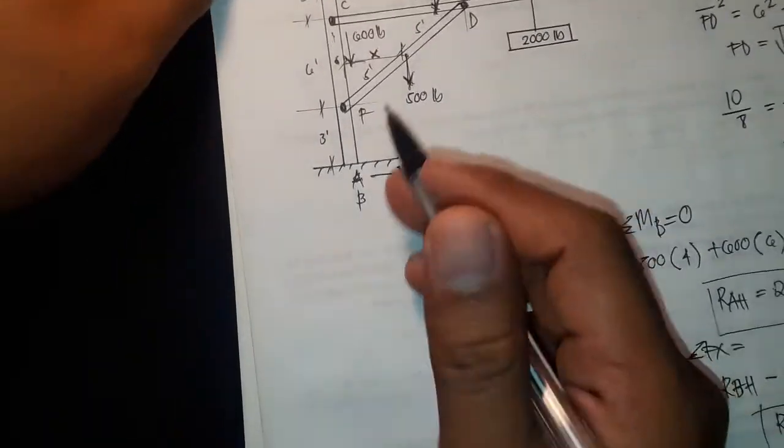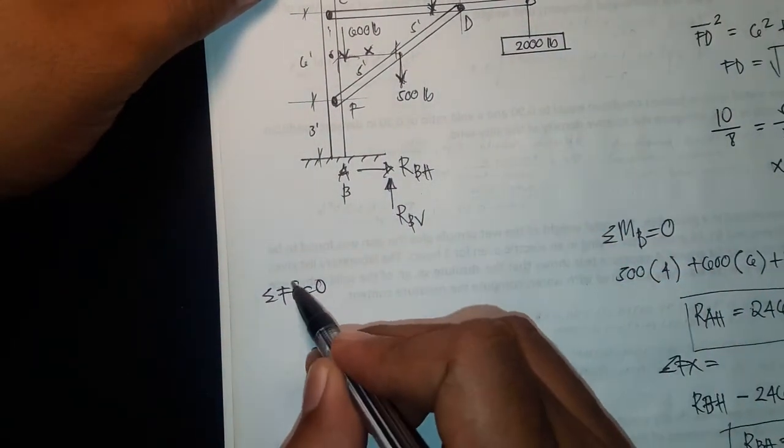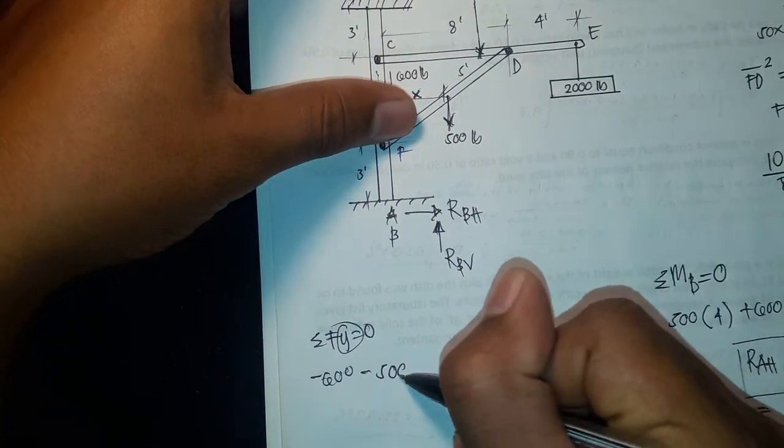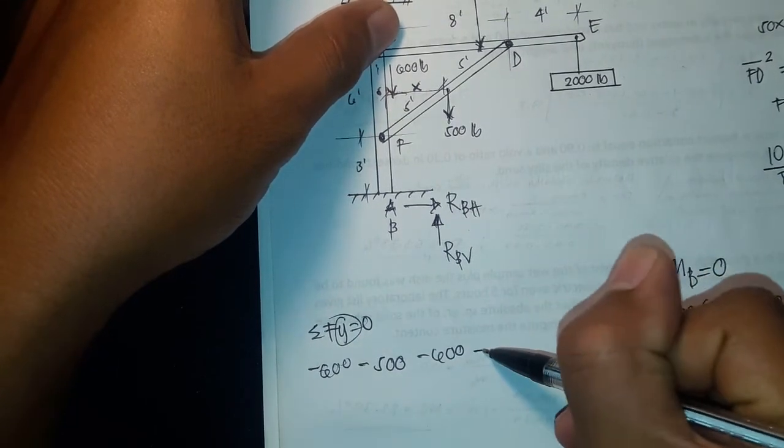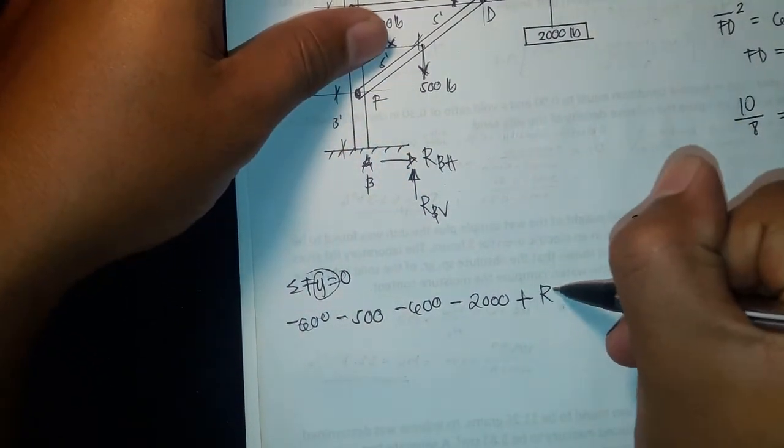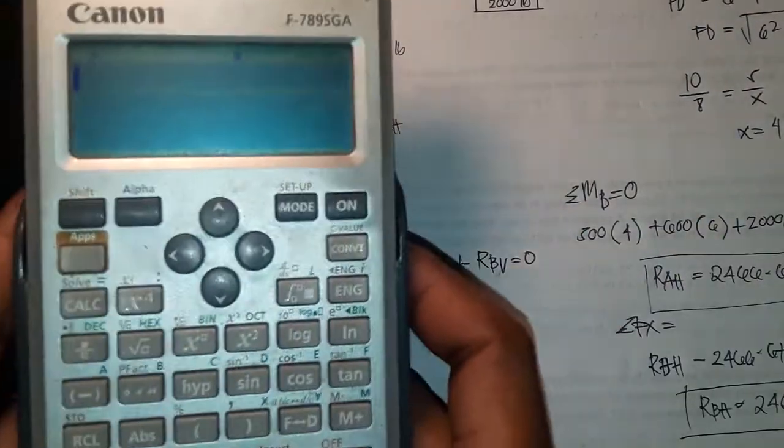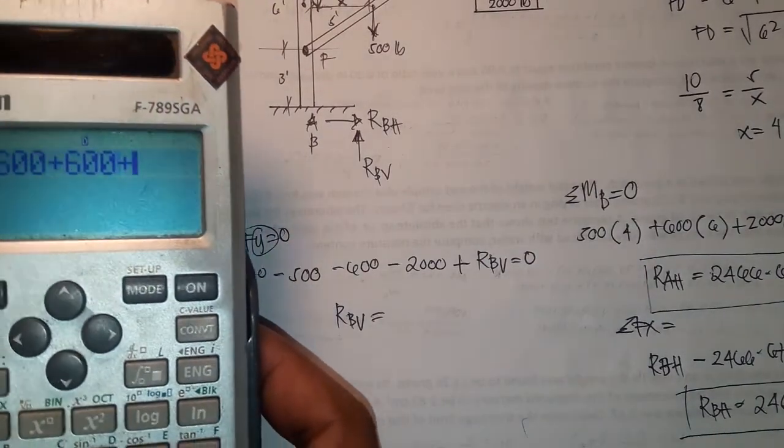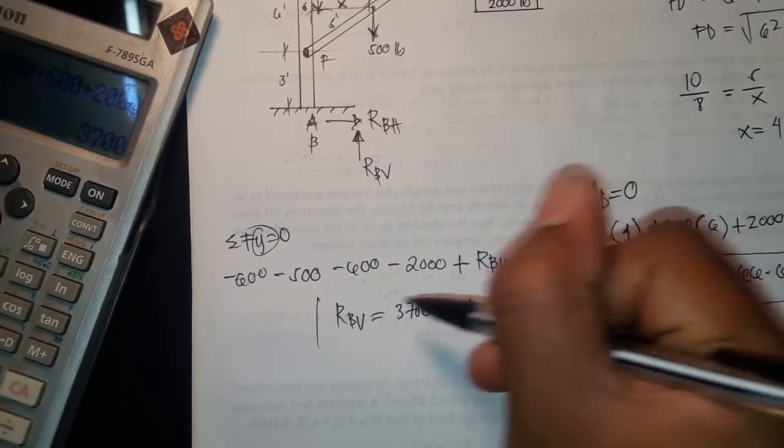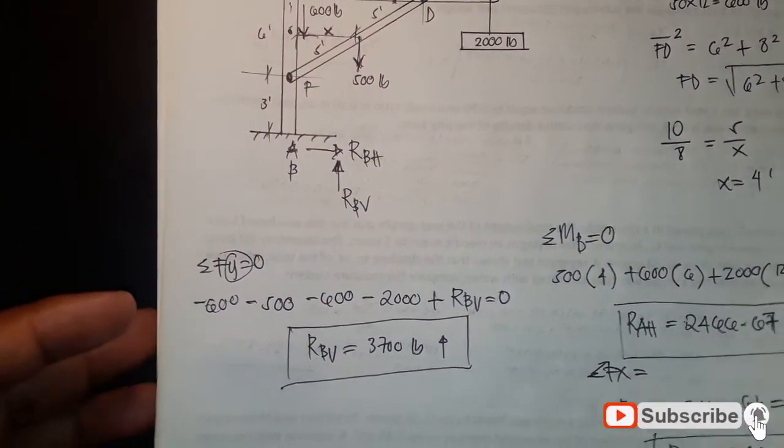Summing up forces Y: we have 600 going down (negative), then 500 going down, 600, 2000, then positive R_B,V equals zero. Adding them all up, R_B,V equals 3700 pounds going up. So our assumption that it's going up was correct.